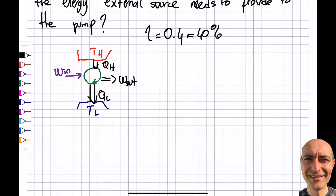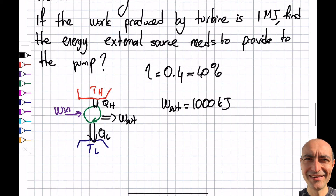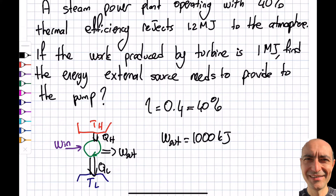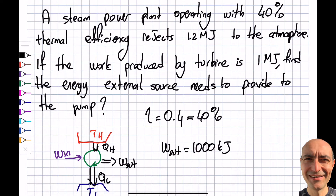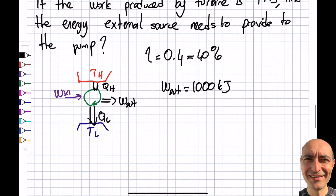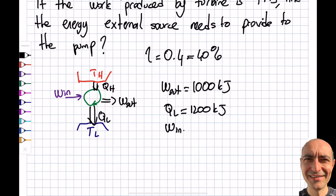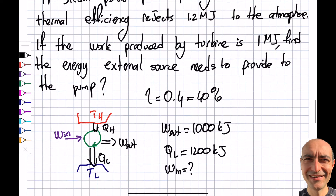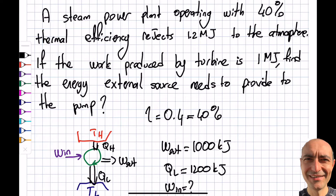The turbine output W_out is given as 1 megajoule. I'll keep everything in megajoules. Reading carefully: the plant rejects 1.2 megajoules to the atmosphere, so Q_L = 1.2 megajoules. That's the reject component. The problem does not directly give me Q_H, so I'll need to solve for it.